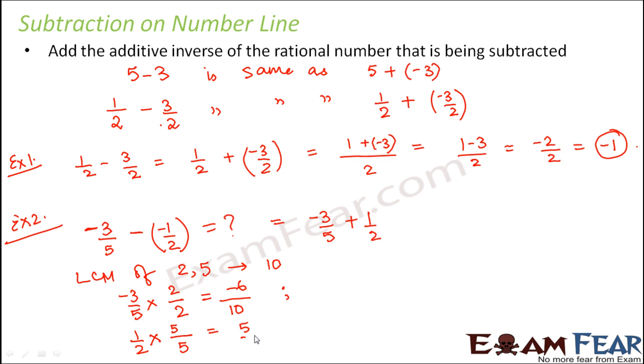Therefore minus 3 by 5 can be written as minus 6 by 10, plus 1 by 2 can be written as 5 by 10. So this is minus 6 plus 5 divided by 10, which is equal to minus 1 by 10. This is how you perform subtraction.